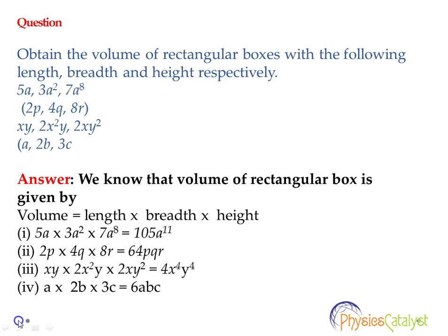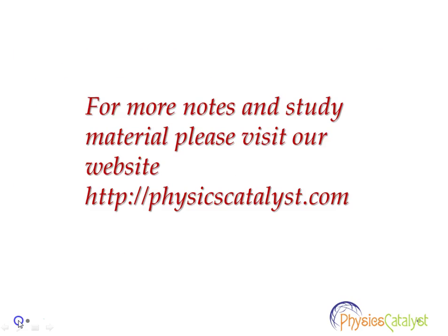So the answer would be 6abc. The summary of this chapter is that if we have to find the multiplication of three algebraic expressions, we need to first segregate the numeric values and multiply them, then segregate the variable terms and multiply them. For more notes and study material, please visit our website physicscatalyst.com. Thank you.